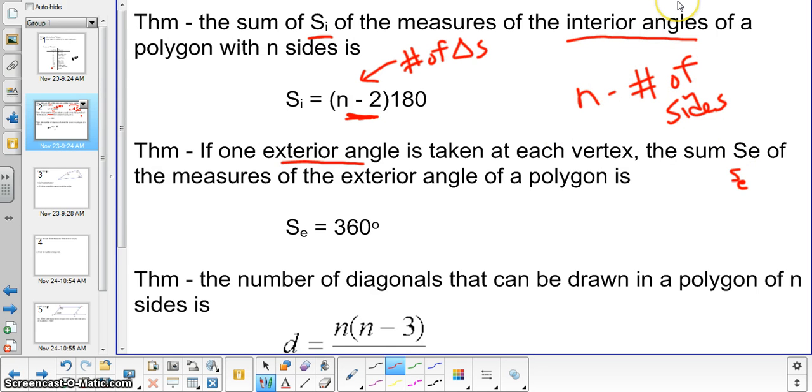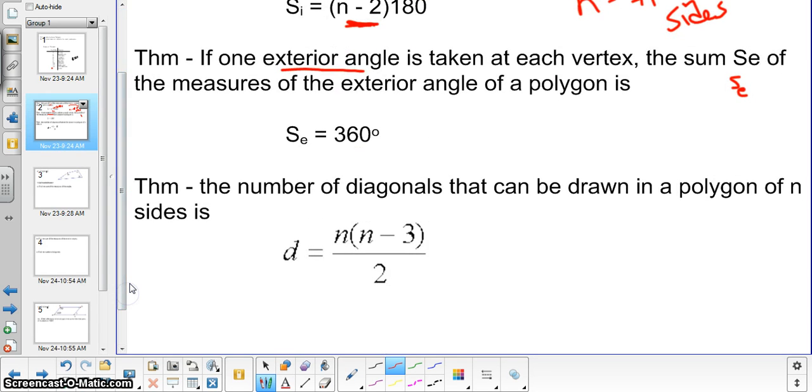And the third one is the number of diagonals that can be drawn in a polygon of n sides. So we have n times the quantity of n minus 3 divided by 2. And again, n refers to the number of diagonals of each vertex. And we will discuss this a little bit later in the video.